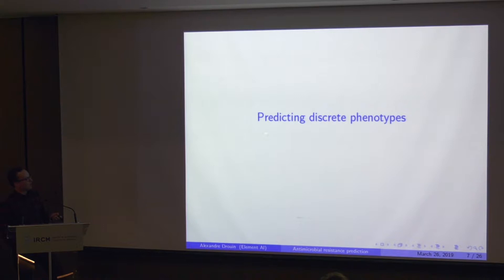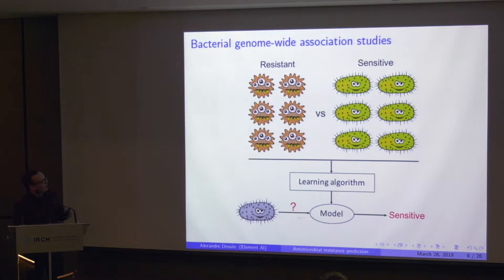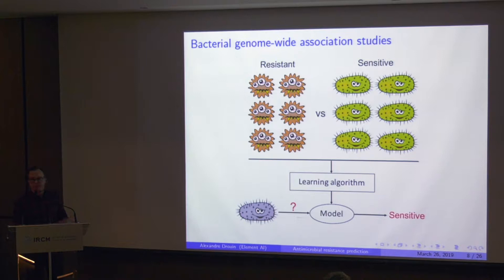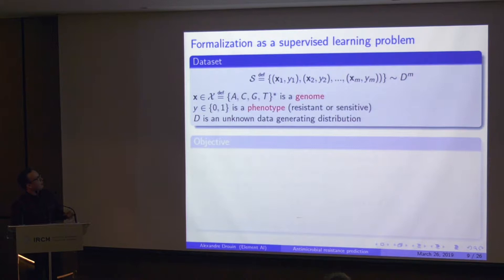The first part of my talk is about predicting discrete phenotypes. This cartoon shows the setup: we have two sets of bacteria — some resistant to an antibiotic and some sensitive — and we have their genomes. We give those genomes to a learning algorithm that compares them and produces a model able to discriminate them, saying: given a new genome, is this the genome of a resistant or susceptible bacterium? This is a supervised learning problem.